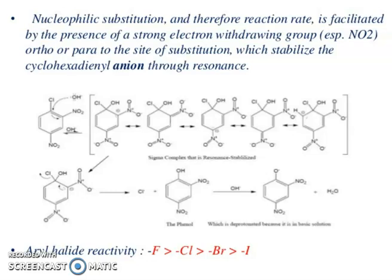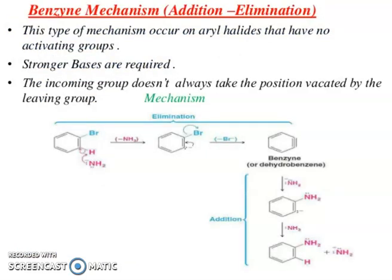Now the benzyne mechanism — we call it elimination-addition. This type of mechanism occurs on aryl halides that have no activating groups. Stronger bases are required. The incoming group does not always take the position vacated by the leaving group. The hydrogen adjacent to bromine at the ortho position is trapped by NH₂⁻, forming a negative charge at the ortho position, followed by elimination to form benzyne.